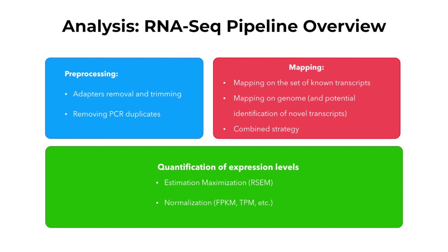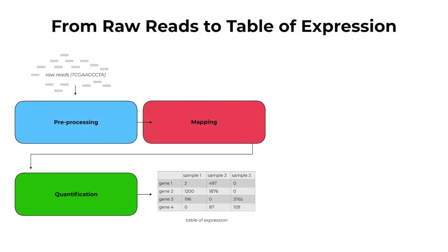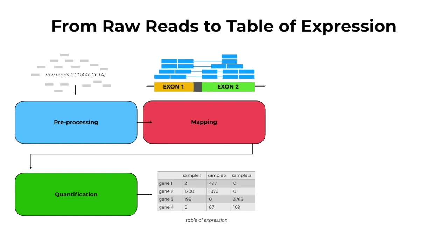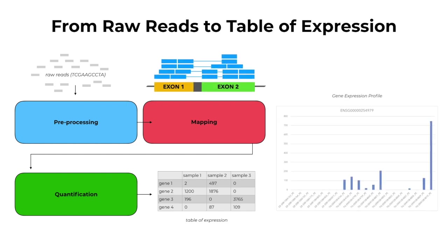Pre-processing is needed to clean up our data by removing the adapters, trimming some of the reads, and removing the PCR duplicates. This is important because PCR amplification is not uniform across all reads. Then we take the cleaned up read sequences to map them onto a reference, using a FASTA file for sequences of the genome and GTF files for annotation. Based on the quality of annotation, we can use various strategies for mapping. Once this step is complete, we quantify expression levels and give each expressed element a number. This process transforms short raw reads in the FASTQ file into structured tables of gene or isoform expression that can be analyzed for expression patterns.